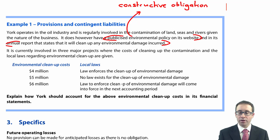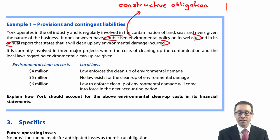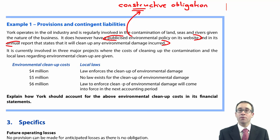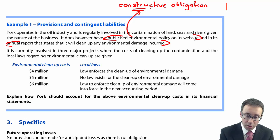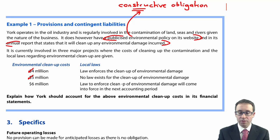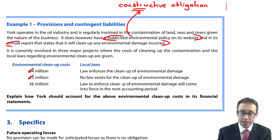York is currently involved in three major projects with costs of four, five and six million. The local laws are effectively irrelevant because we already have a constructive obligation. For the first project there is a law — a legal obligation — and we already have our constructive obligation. For the second, there is no law, but it makes no difference because we have a constructive obligation. For the six million, the law to enforce cleanup will come into force next accounting period, but we're currently involved in the project and we have a constructive obligation — so we provide for the six million as well. Total provision: $15 million.